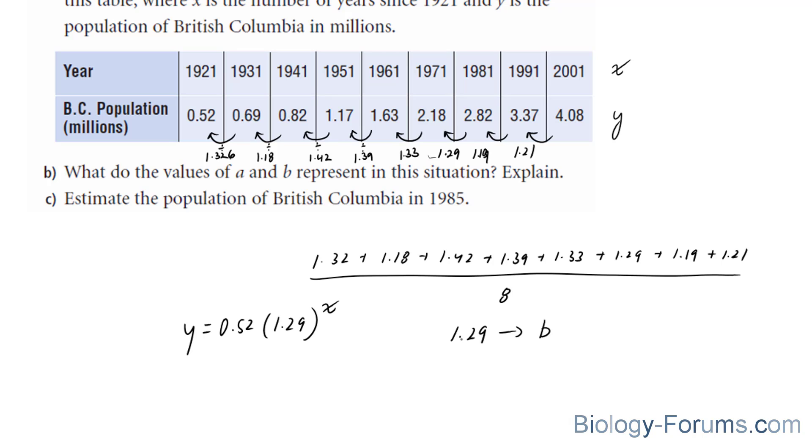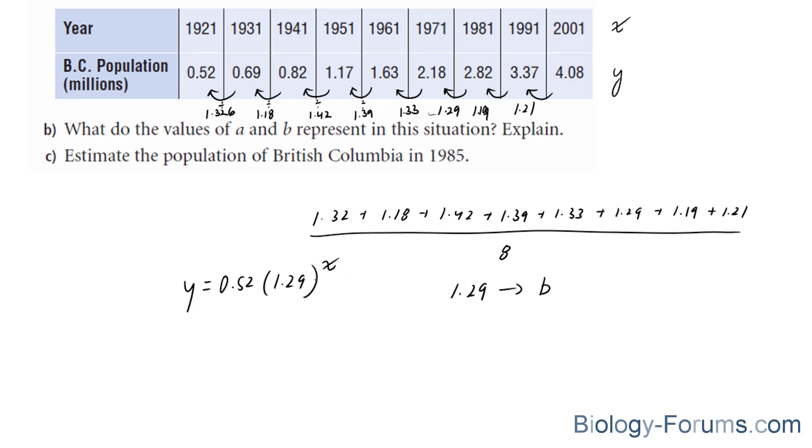Now in the next question, we are asked to estimate the population of British Columbia in 1985. Remember, x represents the year. So technically, we need to put some number into x so that we find out what the population is at that point.